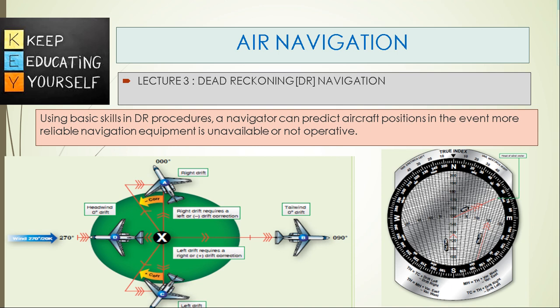Using basic skills in DR procedures, a navigator can predict aircraft positions in the event more reliable navigation equipment is unavailable or not operative.